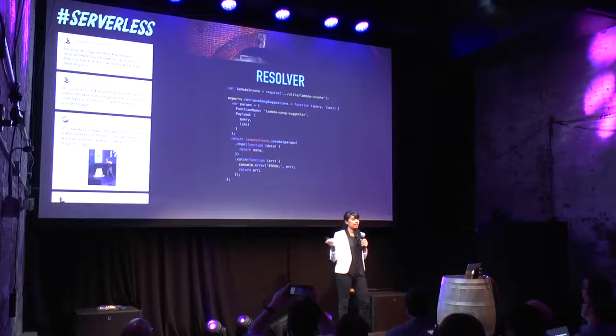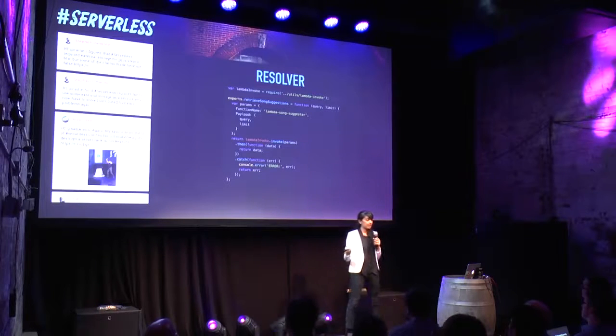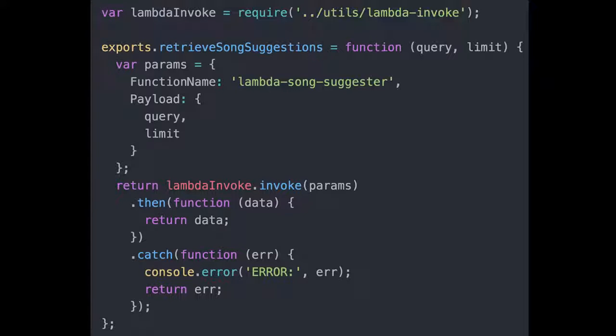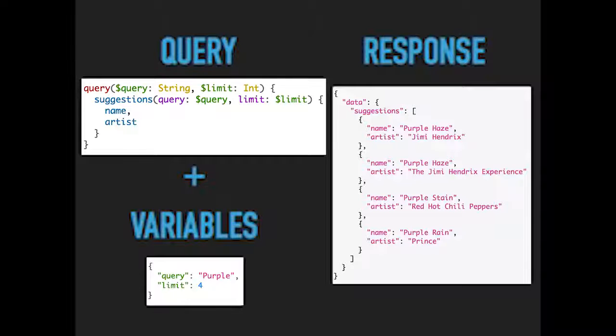Taking a look at the resolver, we can see that it invokes another Lambda function. This Lambda will query a third-party API to get song suggestions back for you, which are sent back to GraphQL and then sent back to the client. So if I was to send a query asking for song suggestions and specifically only the name and the artist, and I also send query variables, I would get a response that looks something like this — an array of songs with just the name and the artist.